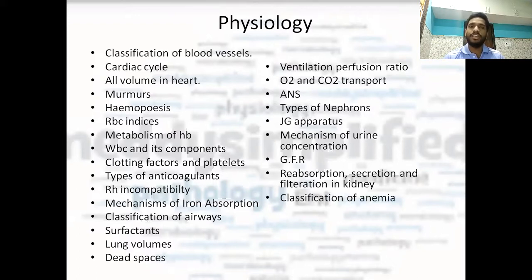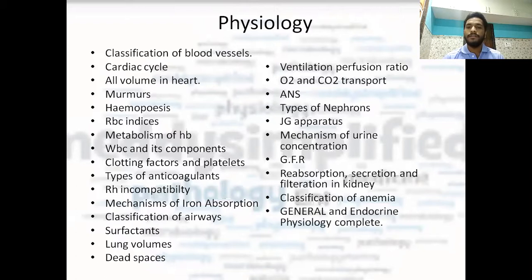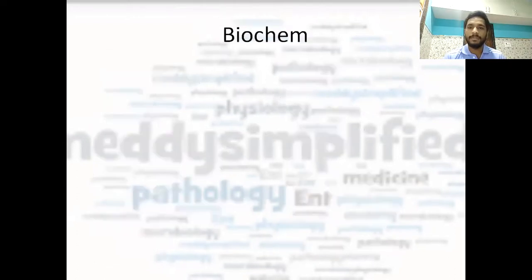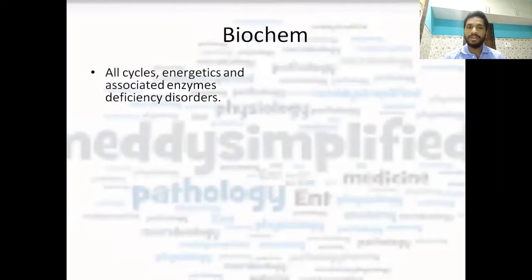Classification of anemia: study it in physiology as well; you will also study it in hematology from pathology. General and endocrine physiology as a whole is important. And EEG — electroencephalography — and sleep waves are important. And GIT and reproductive physiology — you should know all the hormones.